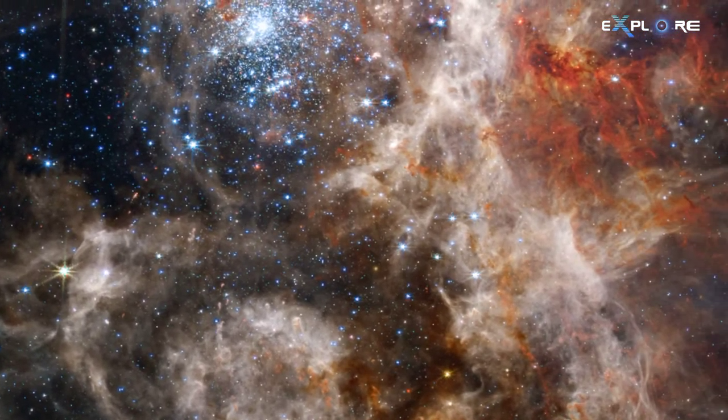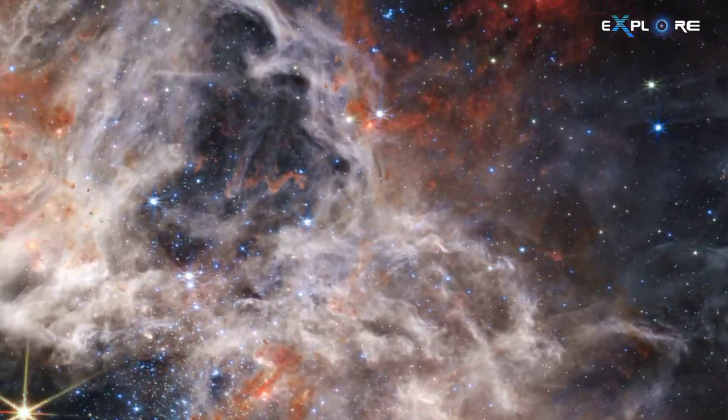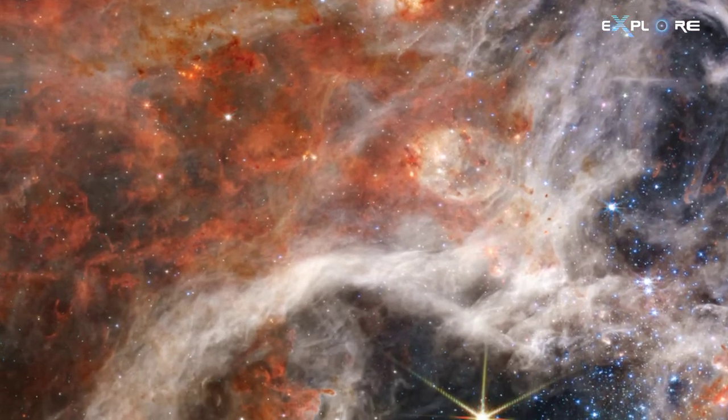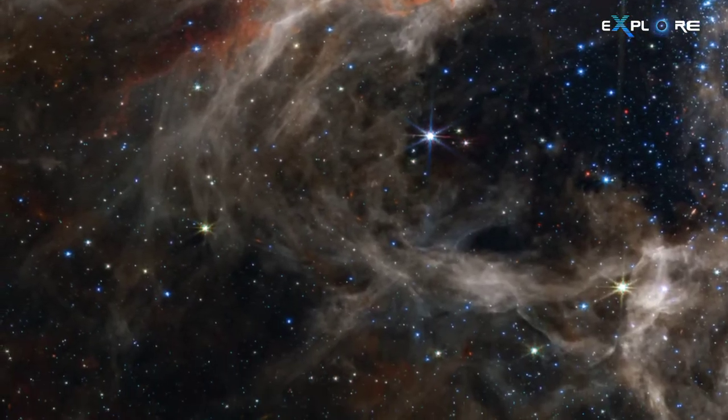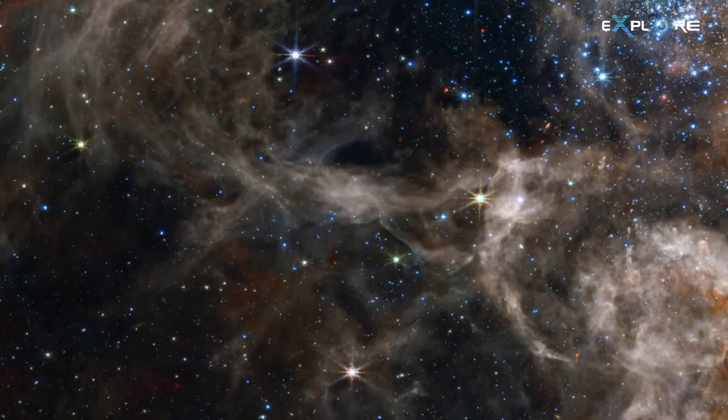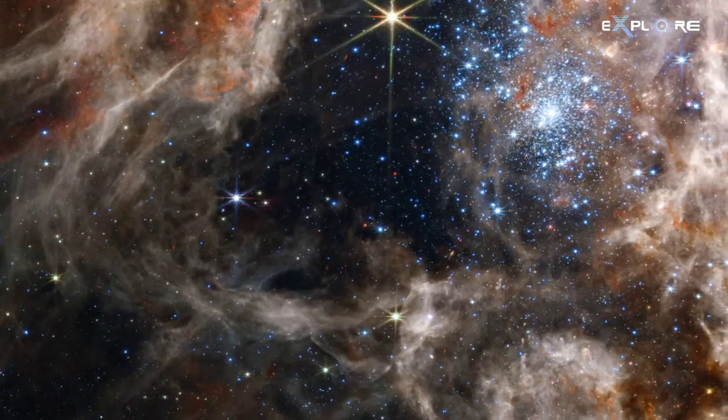Only the densest surrounding areas of the nebula resist erosion by these stars' powerful stellar winds, forming pillars that appear to point back toward the cluster. These pillars contain forming protostars, which will eventually emerge from their dusty cocoons and take their turn shaping the nebula.